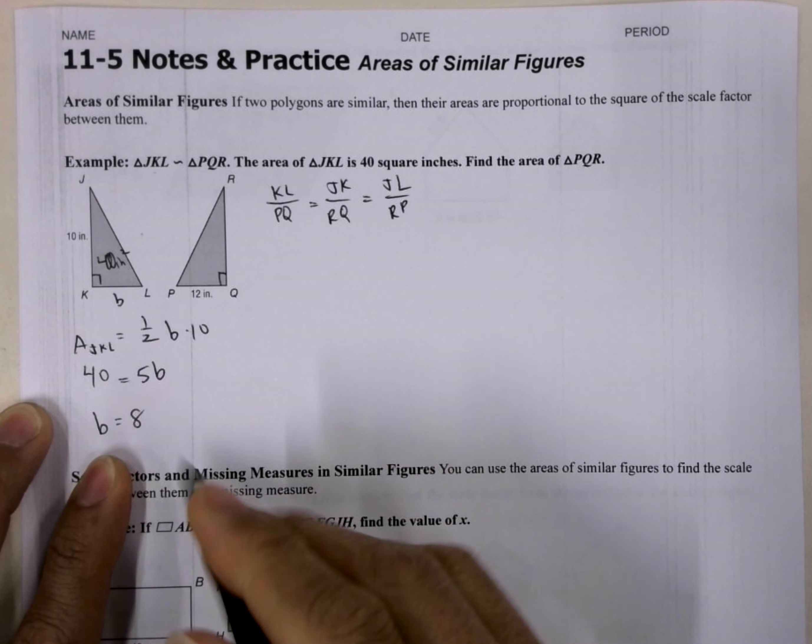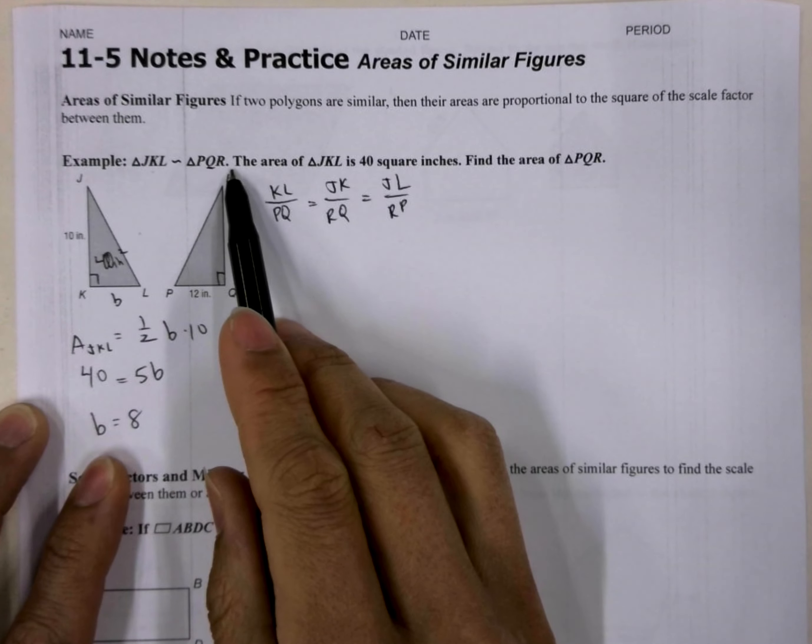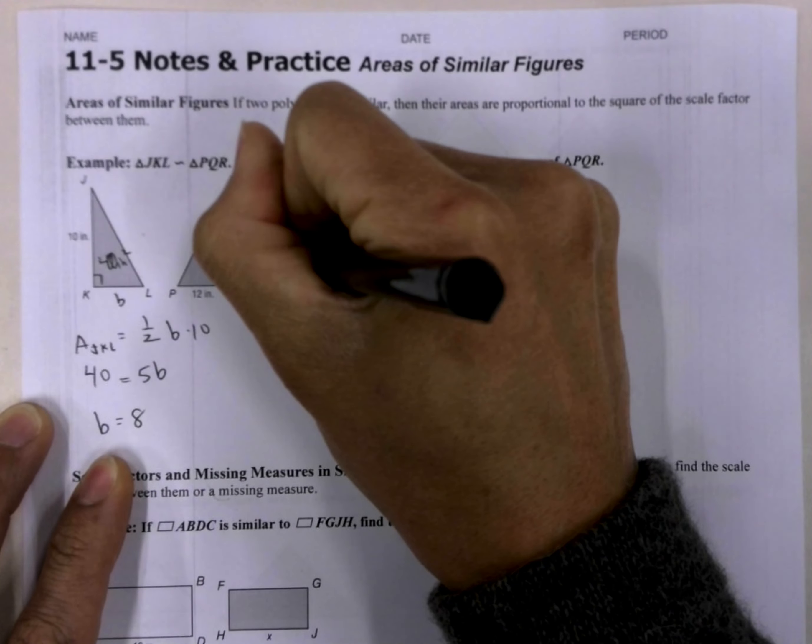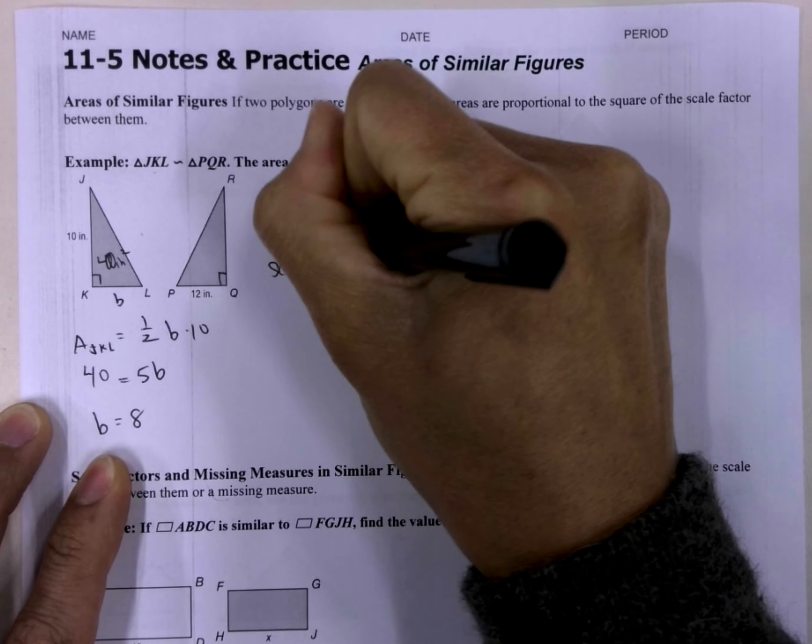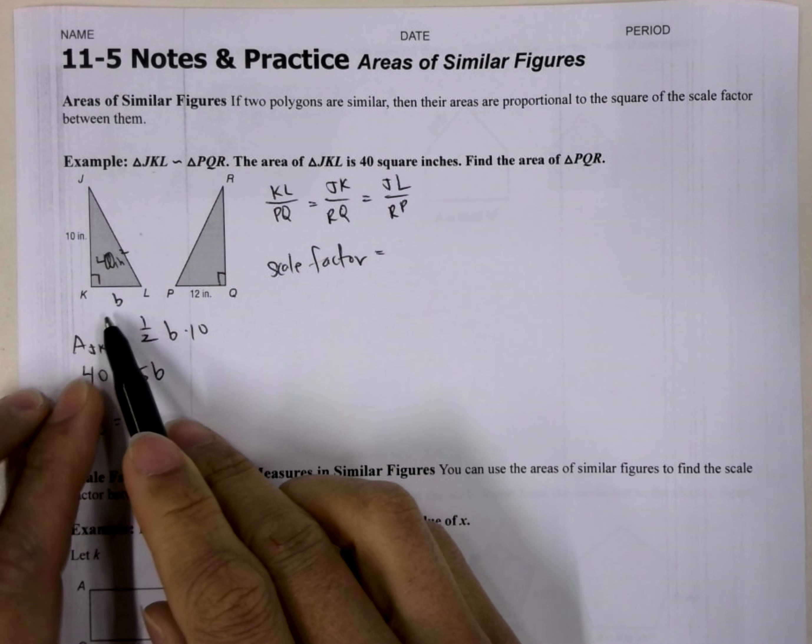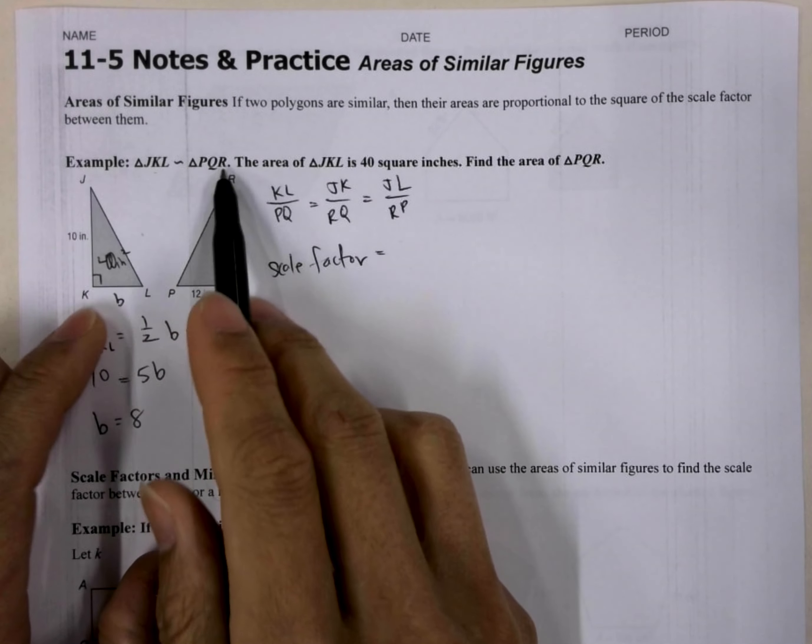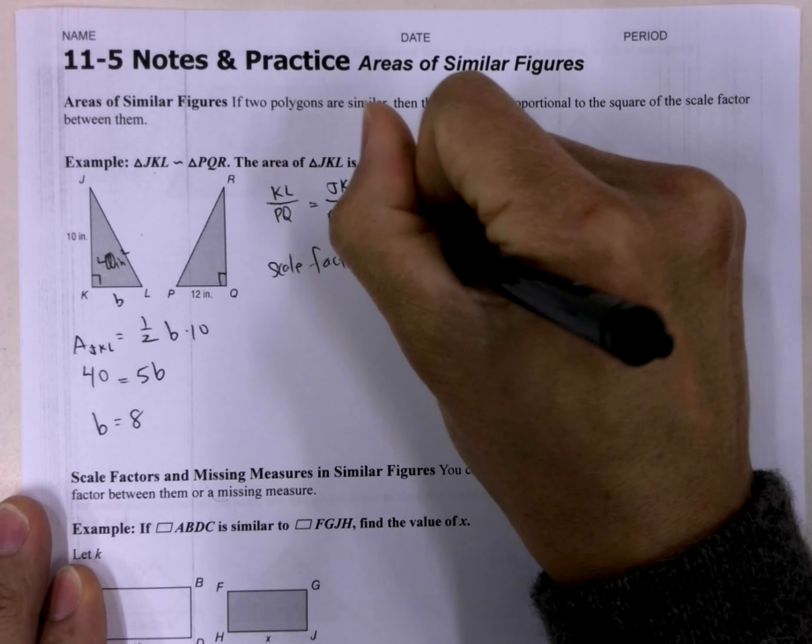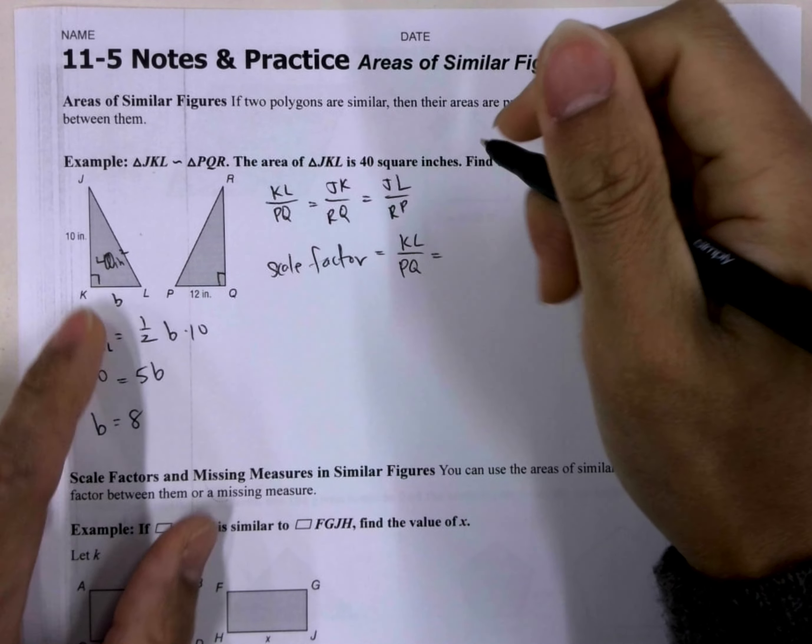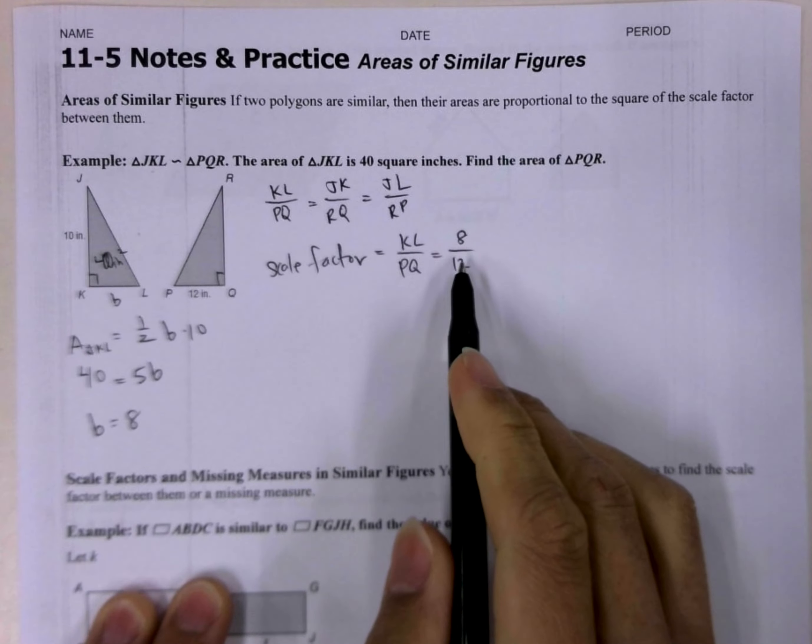Now, they give us that the triangle JKL is similar to triangle PQR. So the scale factor that I'm going to put together is, so I'm going to go ahead and put it over here. Scale factor is equal to, and I'm going to do JKL's part side over the corresponding PQR's side. So it's going to be KL over PQ, which is going to be, KL is B which is 8, over PQ which is 12. So that's our scale factor.